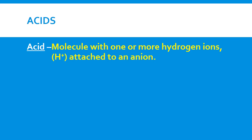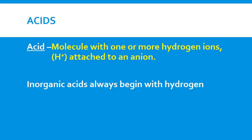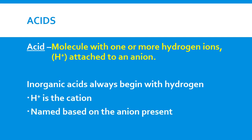Let's transition into acids. How do we name acids? First, we need to know what acids are. Acids are compounds that contain hydrogen ions attached to an anion, so hydrogen ions are always going to be our cation. In inorganic acids, hydrogen will always be at the front of the formula. When we name the acid, we name it based on the anion present.